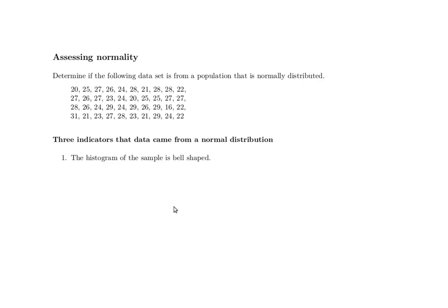There are three natural indicators that data comes from a normal distribution. The first is: is the histogram of the sample bell-shaped? Secondly, there should be very few, if any, outliers. And finally, the QQ norm plot should be nearly linear.